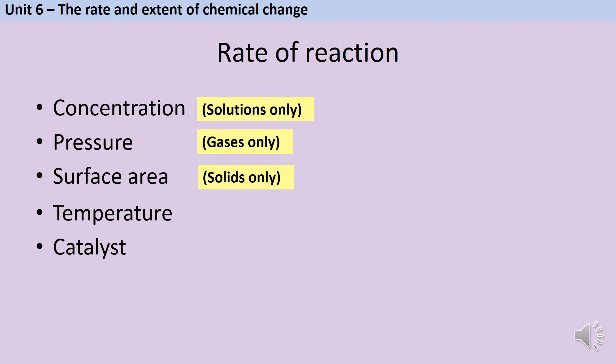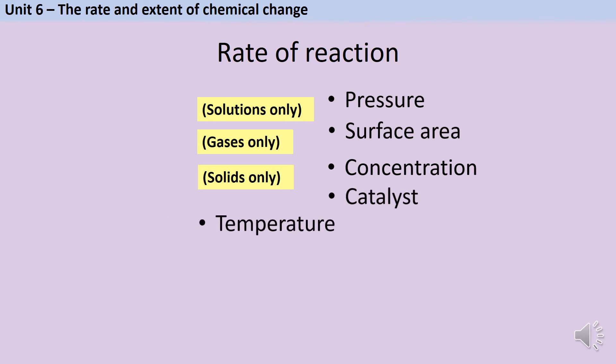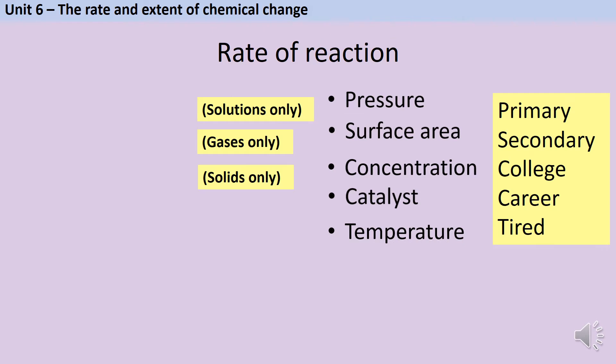I like to remember these using a mnemonic. The first school you went to was a primary school. P is for pressure. The second school you went to was a secondary school. S for surface area. Next you might be going to college. C-O for concentration. After college you'll have a career. C-A for catalyst. And at the end of your career you're going to be tired. Primary, secondary, college, career, tired. Pressure, surface area, concentration, catalyst, temperature.